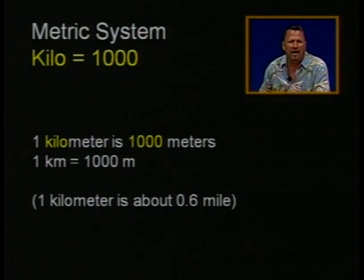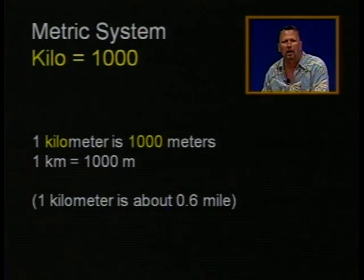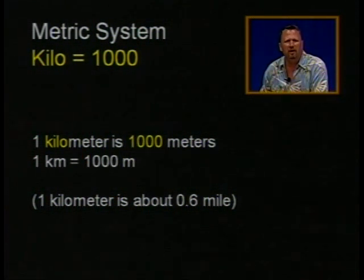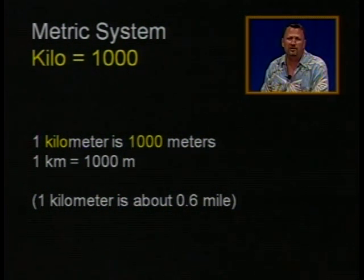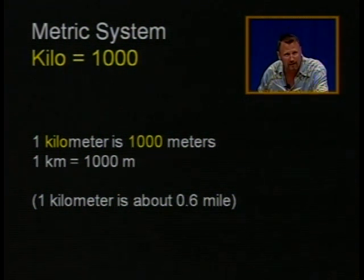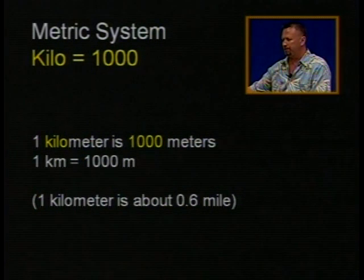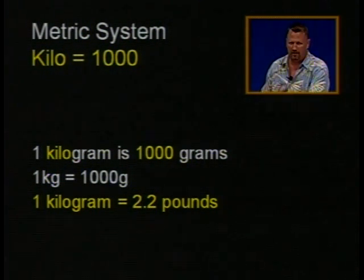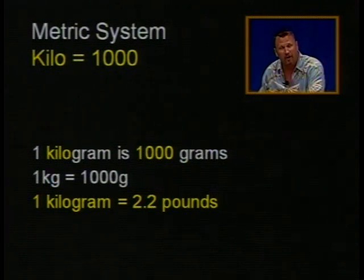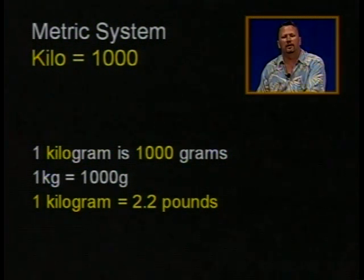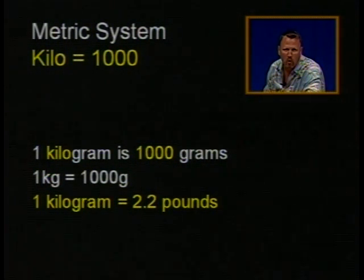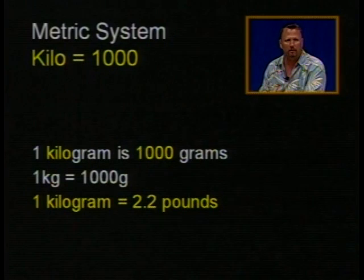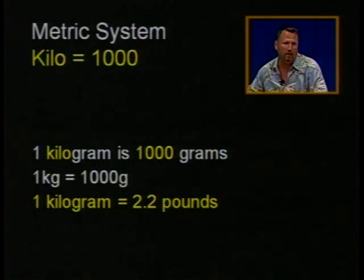The word kilo means one thousand. So kilo-anything is one thousand of them. A kilometer is one thousand meters — about three feet per meter — and a kilometer is about six-tenths of a mile. But the key thing is: kilo means one thousand. A kilogram is one thousand grams. A kilogram is 2.2 pounds, and that is something you will need to commit to memory forever if you're going to be in the healthcare business. One kilogram weighs 2.2 pounds. There are 2.2 pounds per kilogram. Kilo equals 1,000.